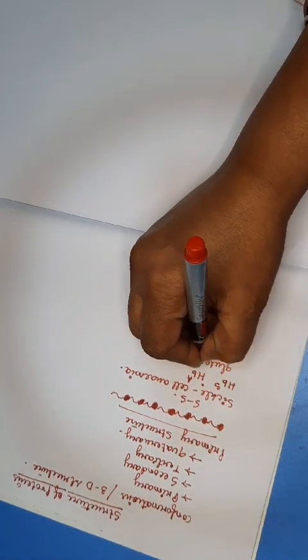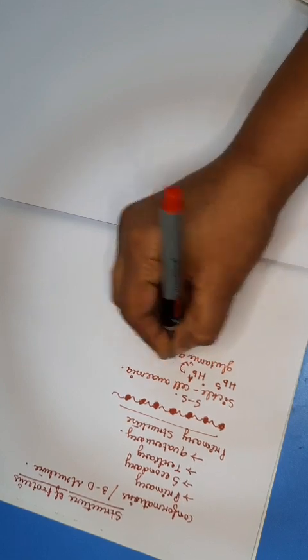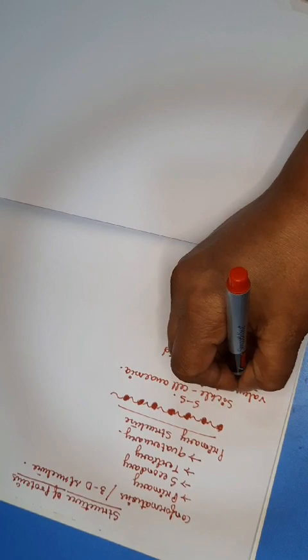Hemoglobin S differs from normal hemoglobin A only in the position of one amino acid in the beta chain. In normal conditions, glutamic acid is present in the sixth position of the globin chain. When glutamic acid is substituted by valine at the sixth position, with all other positions remaining constant, sickle cell RBCs are generated. Due to the sickle shape, the oxygen-binding capacity of RBCs is greatly reduced, and they cannot pass through narrow blood capillaries, causing clotting and degeneration.